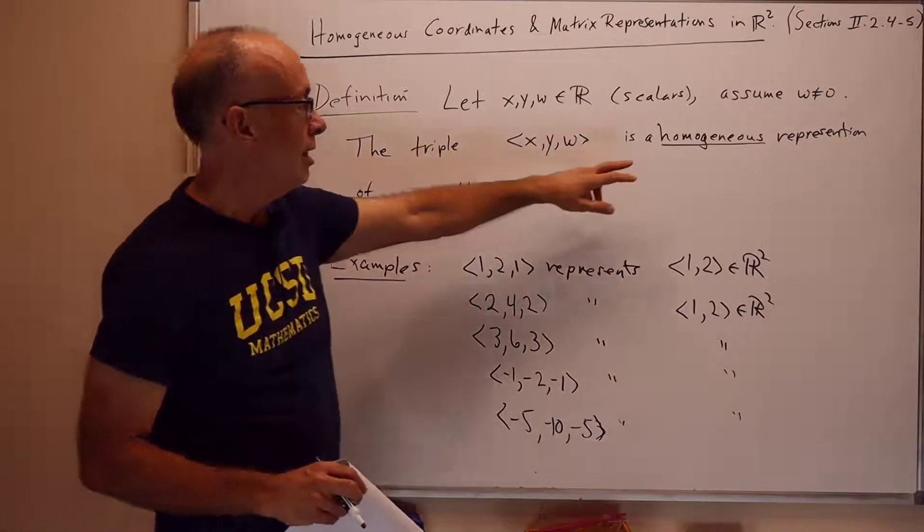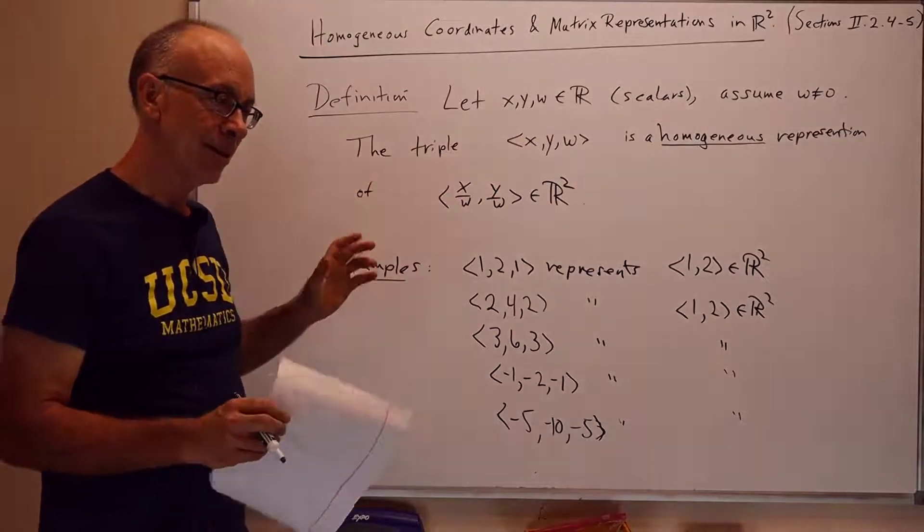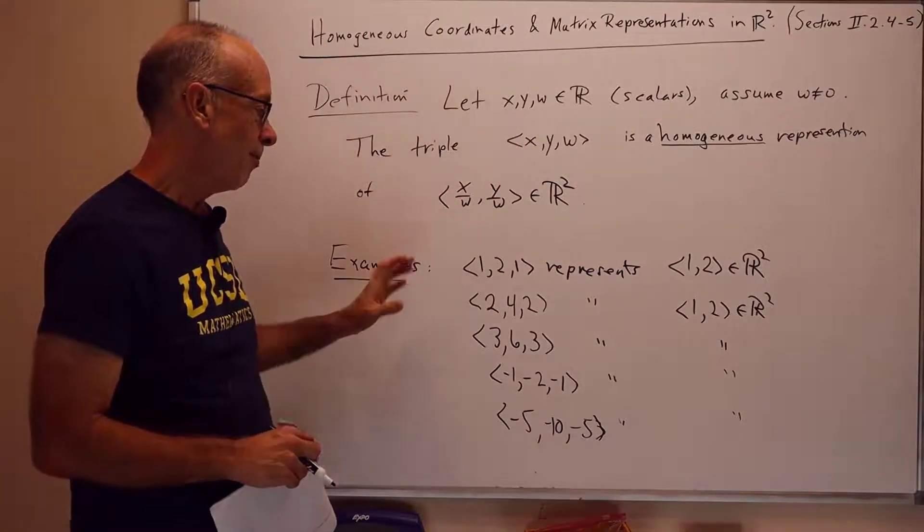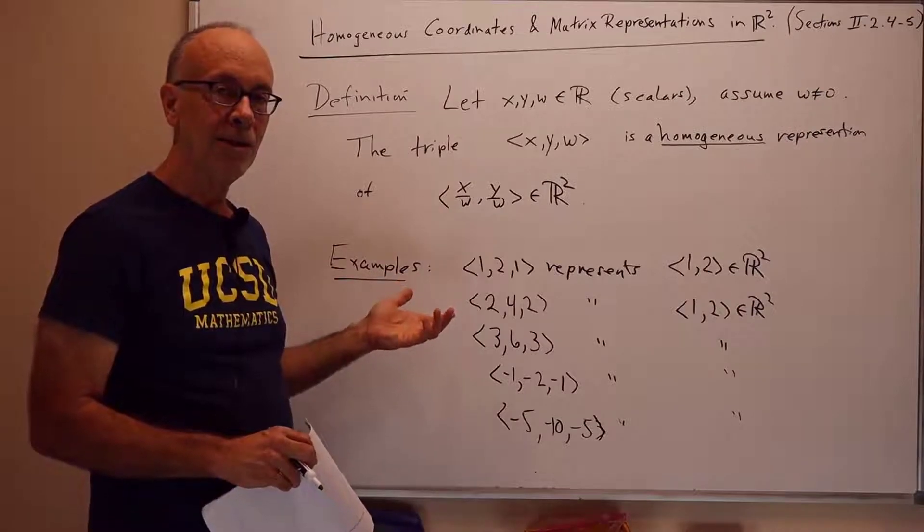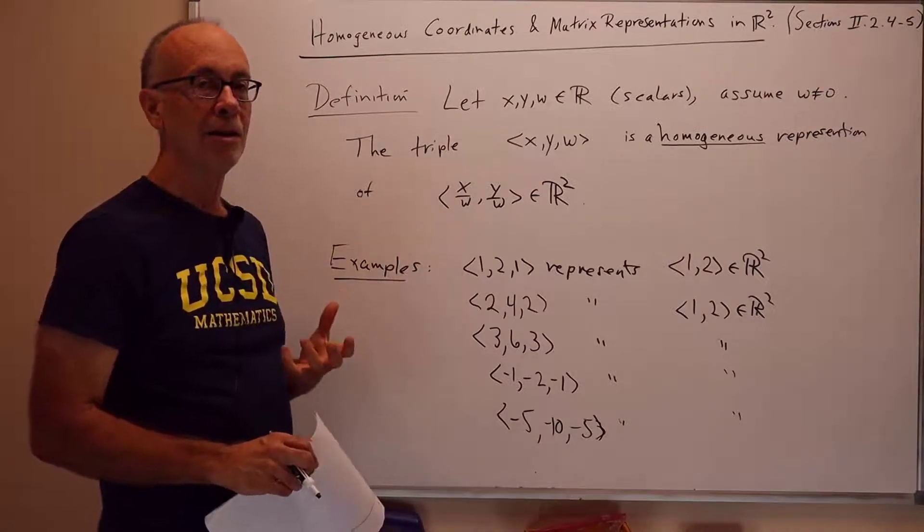So, the word homogeneous really means, sort of thing is smoothed out. It really refers to the fact that if you multiply by a constant, triple x, y, w, it still represents the same point in R2.